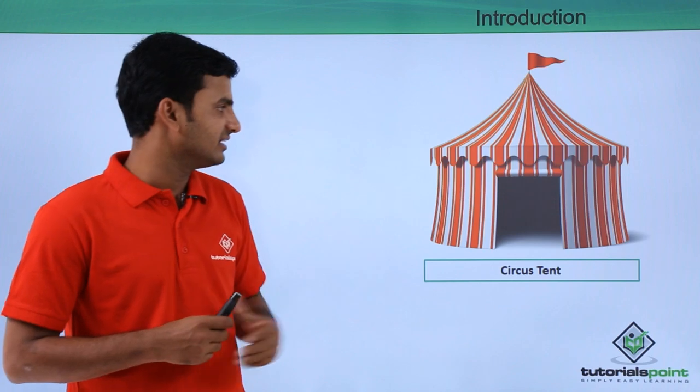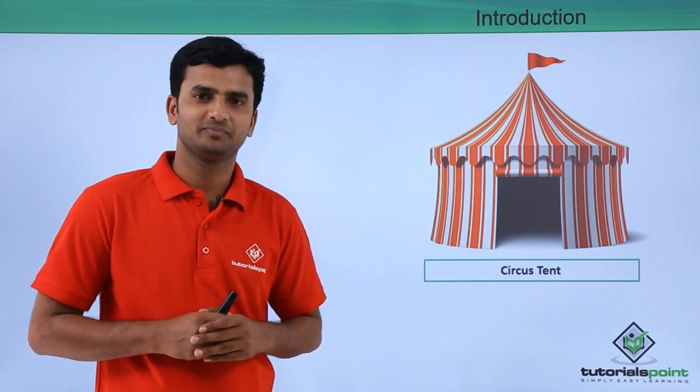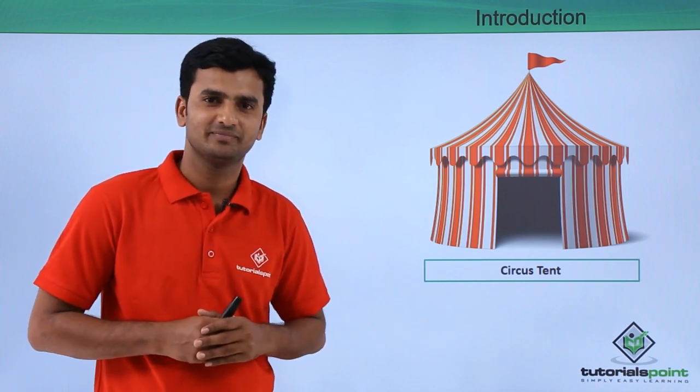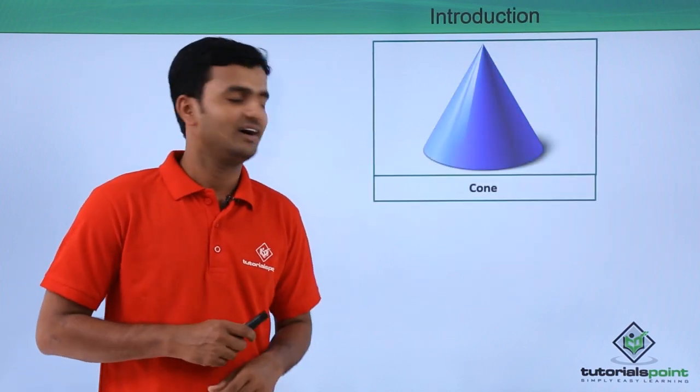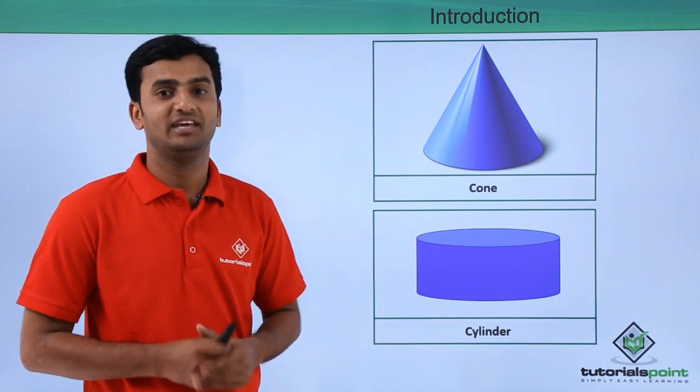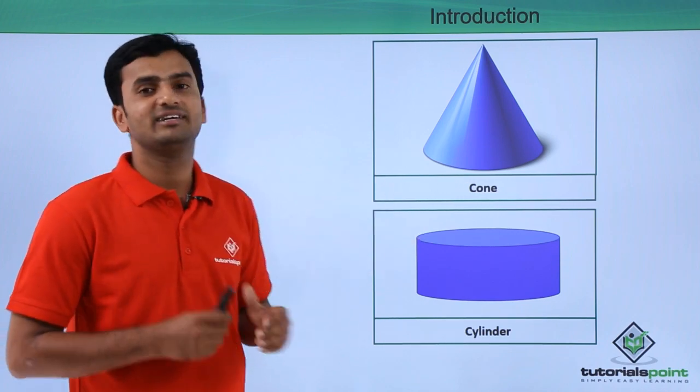If you observe this circus tent, you'll find two basic shapes. Can you find out what are they? The upper portion looks like a cone and the downward portion looks like a cylinder. If you combine them, it looks like a tent.